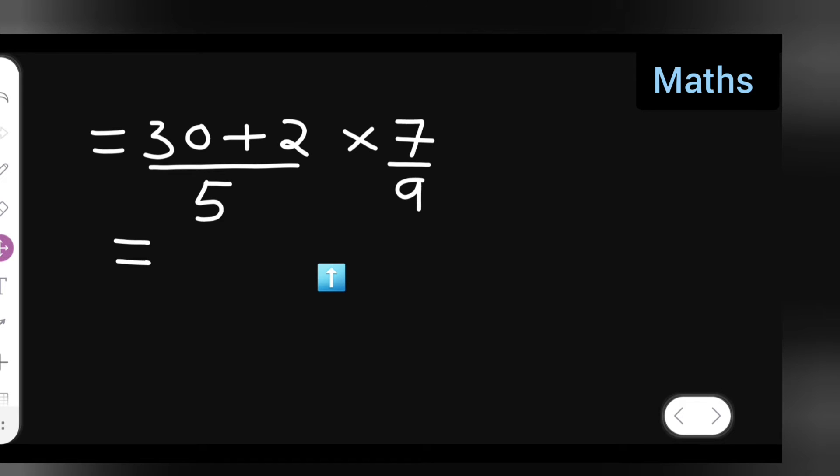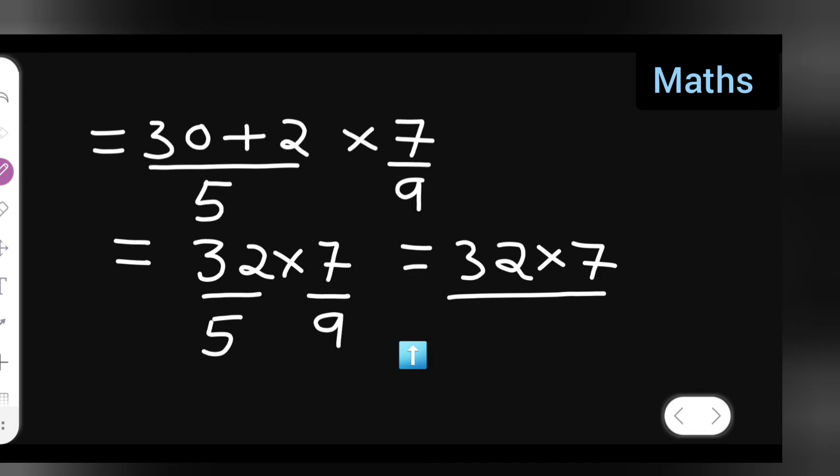Then 30 plus 2 is 32, 32 upon 5 multiplied by 7 upon 9. After this, what you will have to do is 32 multiplied by 7 upon 5 multiplied by 9.